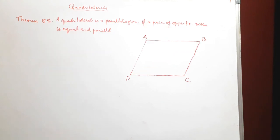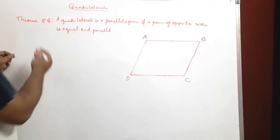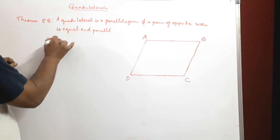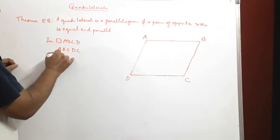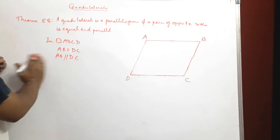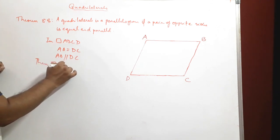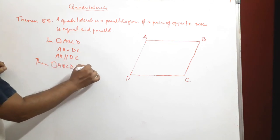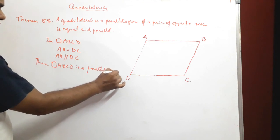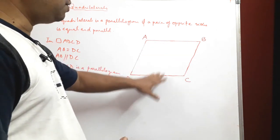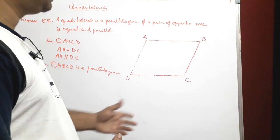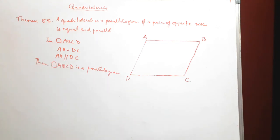The last theorem we cover in this video is theorem 8.8, which says a quadrilateral is a parallelogram if a pair of opposite sides is equal and parallel. In other words, if in quadrilateral ABCD, AB is equal to DC and AB is parallel to DC, then quadrilateral ABCD is a parallelogram. This is another property: if a pair of opposite sides are parallel and equal, the quadrilateral becomes a parallelogram.